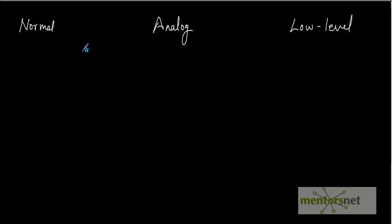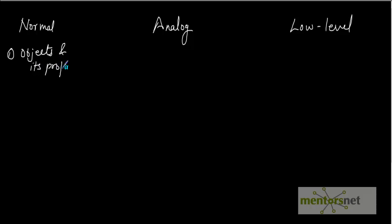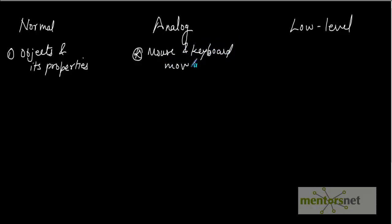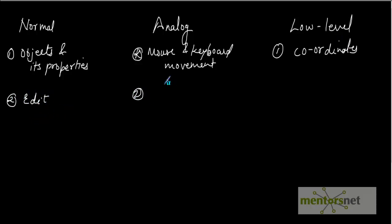To summarize the differences between the three recording modes: Normal recording works on objects and their properties. Analog recording works on mouse and keyboard movement - it does not work on objects. Low level recording works on coordinates. Regarding editing: in normal recording you can edit the recorded steps; in analog recording you cannot edit the steps because they get recorded into one .dat file; in low level recording you can edit the steps.